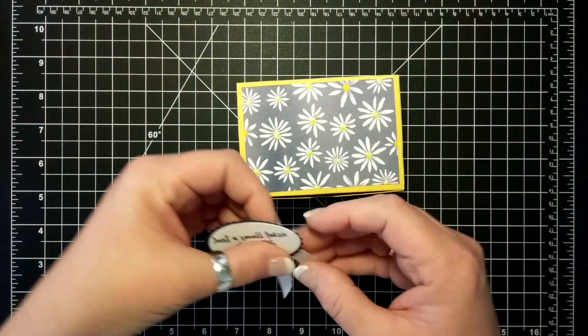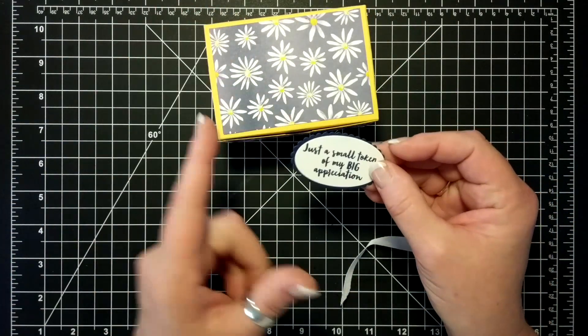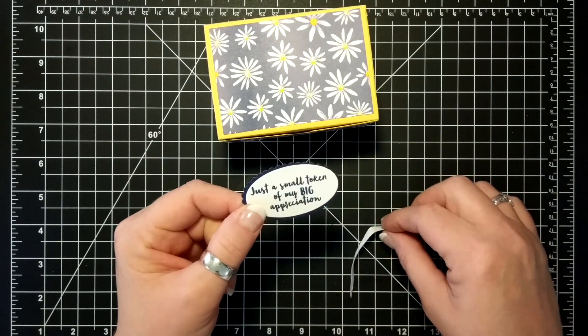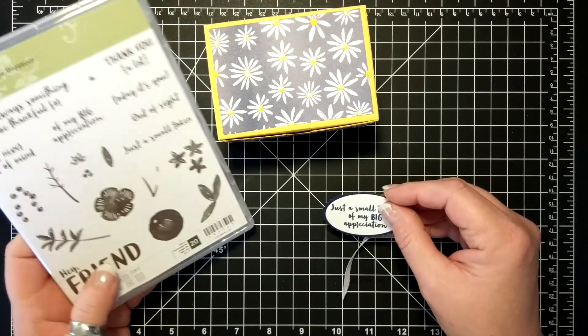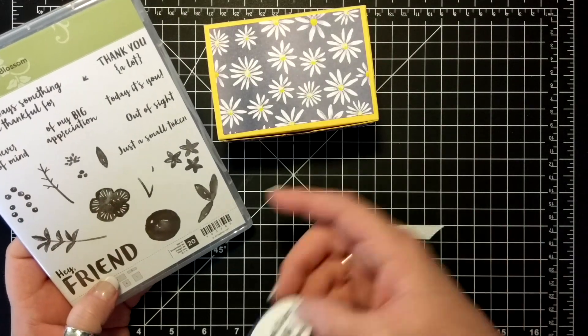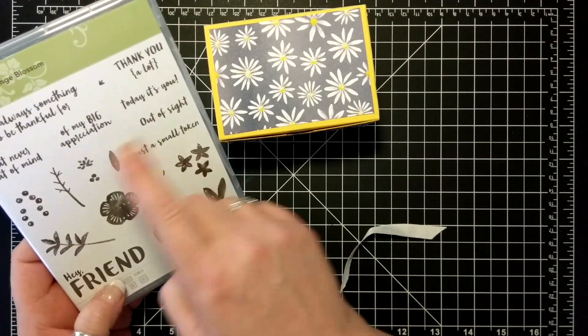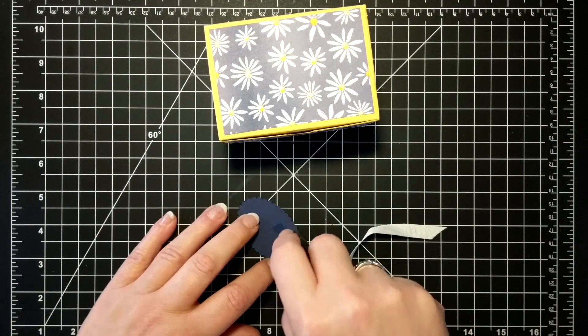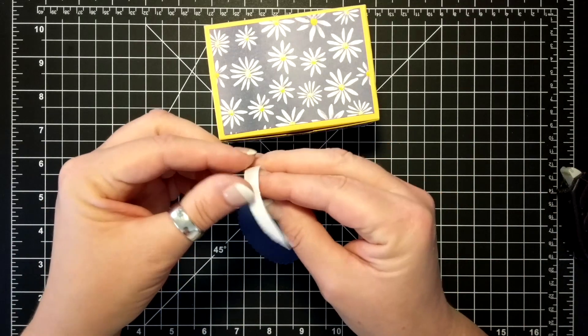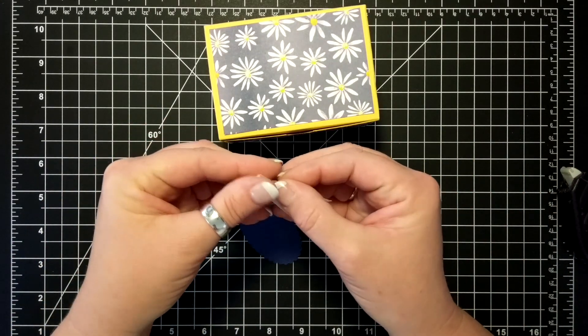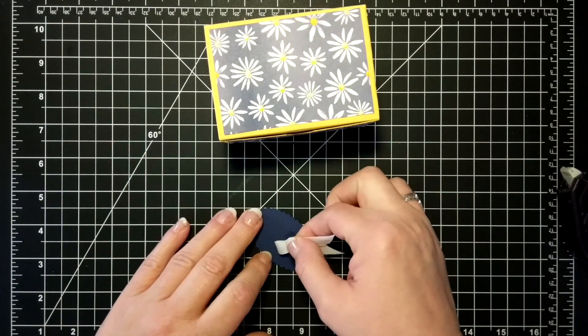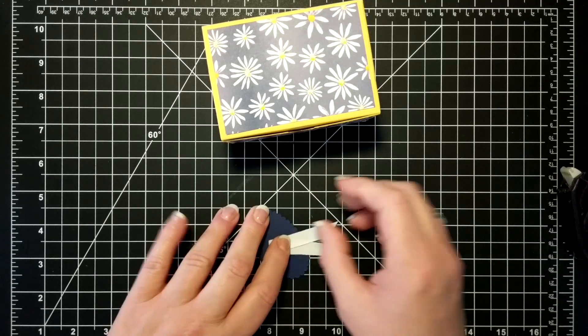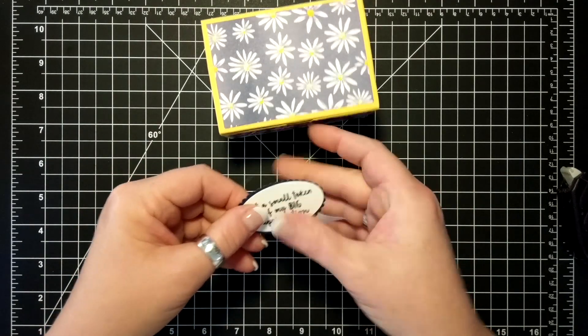And then I have some Night of Navy and Whisper White. And I used the Orange Blossom stamp set. Just a small token of my big appreciation. I'm going to put a little bit of fast fuse here. This is classic weave ribbon. I am, you know, a couple inches. I'm just going to adhere that to the back just like that.